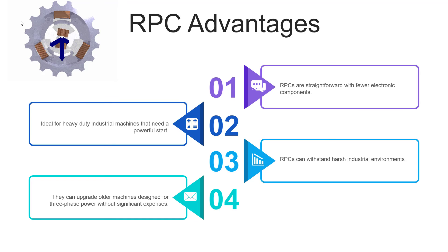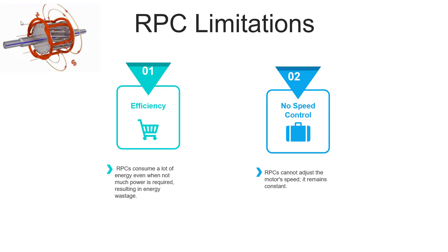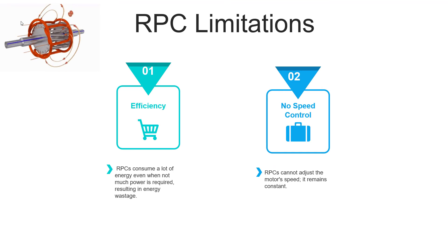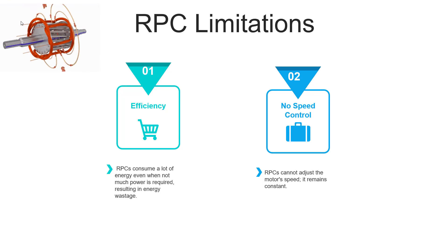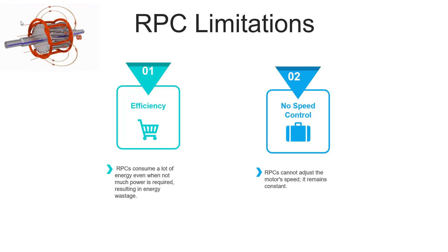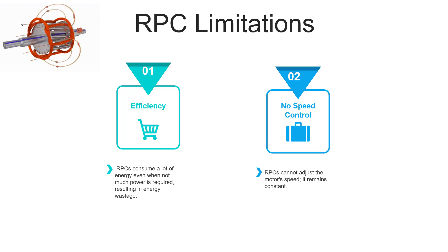However, there are some limitations of RPC. The first limitation is efficiency — RPCs consume a lot of energy even when not much power is required, resulting in energy wastage. The second limitation is no speed control — RPCs cannot adjust the motor's speed; it remains constant.